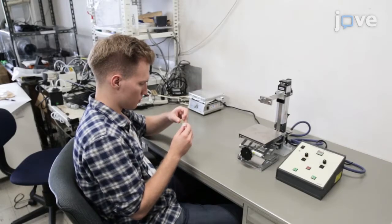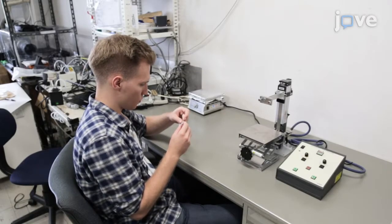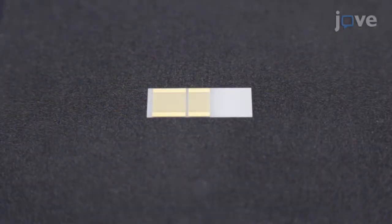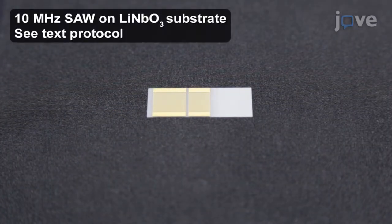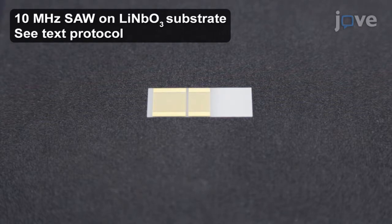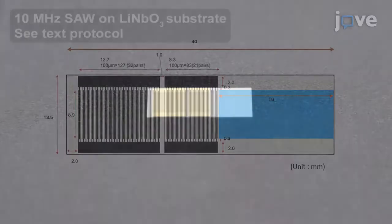Prepare the surface acoustic wave device for the olfactory display. This device has an interdigitated transducer with reflectors on one end of a piezoelectric substrate. Additional details are in this schematic.